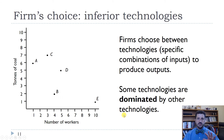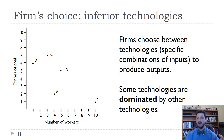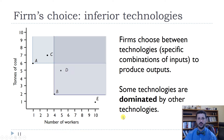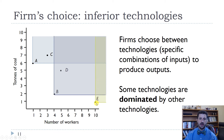Some of these choices are clearly worse because they require more of at least one input and the same or more of the other. We say those technologies are dominated by other technologies. We can see this by drawing vertical and horizontal lines from each point. C is dominated by A because C needs more tons of coal — seven instead of six — and more workers — three instead of one. D is dominated by B: more coal, five instead of two, and more workers, five instead of four. There are no technologies dominated by E, so the remaining technologies we'll focus on are A, B, and E.